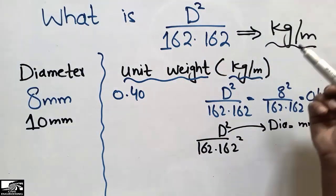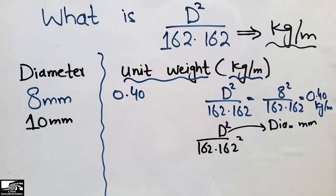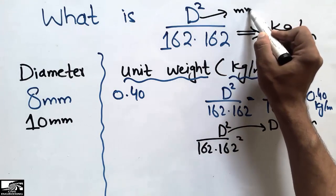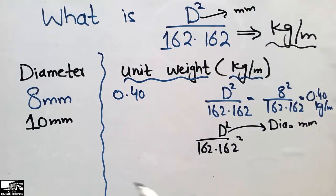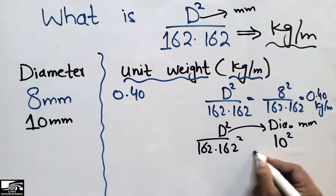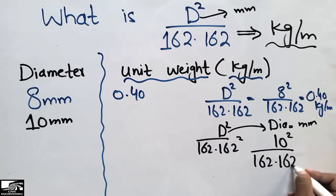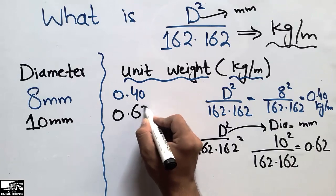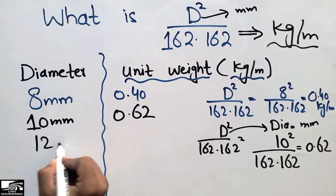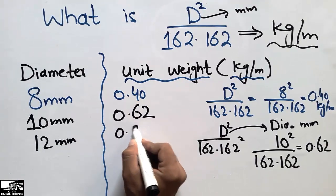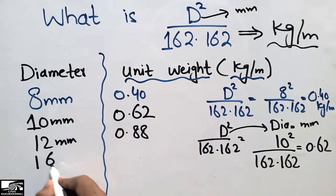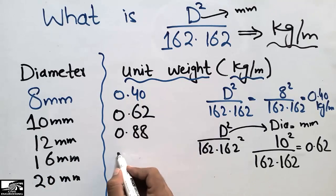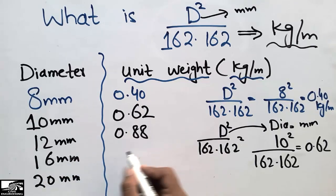This formula is derived from first principles where D must be in millimeters and the answer is in kilogram per meter. For the 10 millimeter bar: 10 squared divided by 162.162 gives 0.62 kg/m. Similarly, for a 12 millimeter bar we get 0.88 kg/m, and we can find unit weights for 16mm and 20mm bars the same way — just substitute their diameter in millimeters.